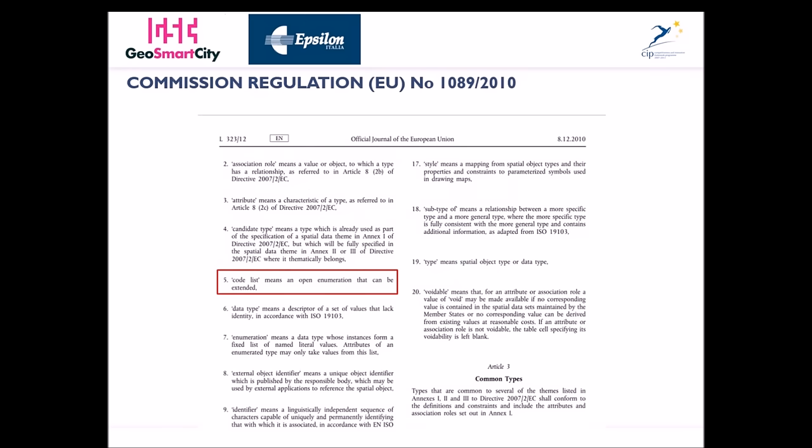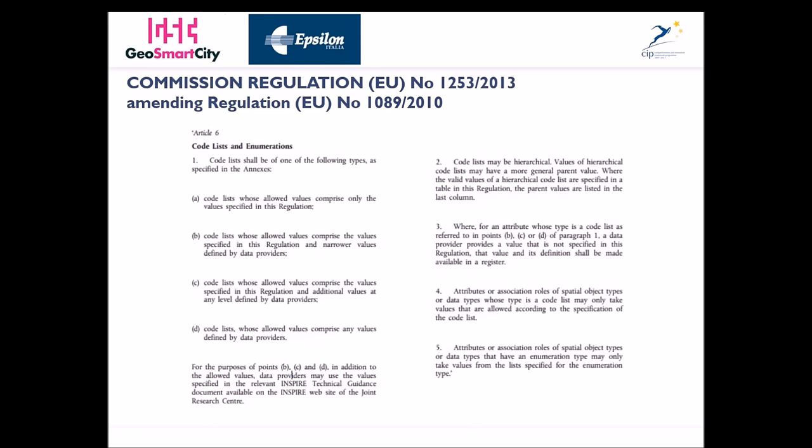The implementing rules provide a definition of what a codelist is: a codelist is an open enumeration that can be extended, whereas an enumeration is a fixed list of named literal values. Article VI of the implementing rules, as amended by Commission Regulation No. 1253, defines four possible types of codelists and sets out rules to be followed to extend codelist values.